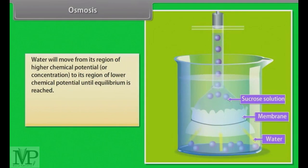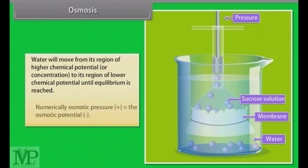Now, we will apply some pressure to stop the water movement into the funnel. This pressure required to prevent water from diffusing is, in fact, the osmotic pressure and this is the function of the solute concentration. More the solute concentration, greater will be the pressure required to prevent water from diffusing in. Numerically, osmotic pressure is equivalent to the osmotic potential but the sign is opposite. Osmotic pressure is the positive pressure applied while osmotic potential is negative.